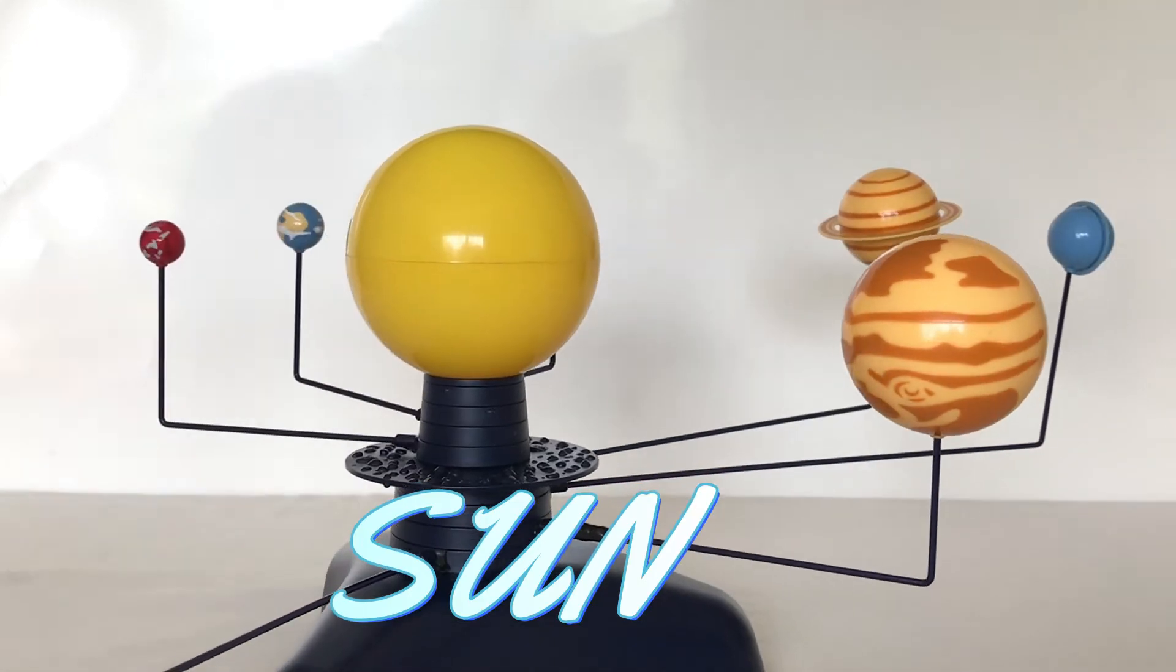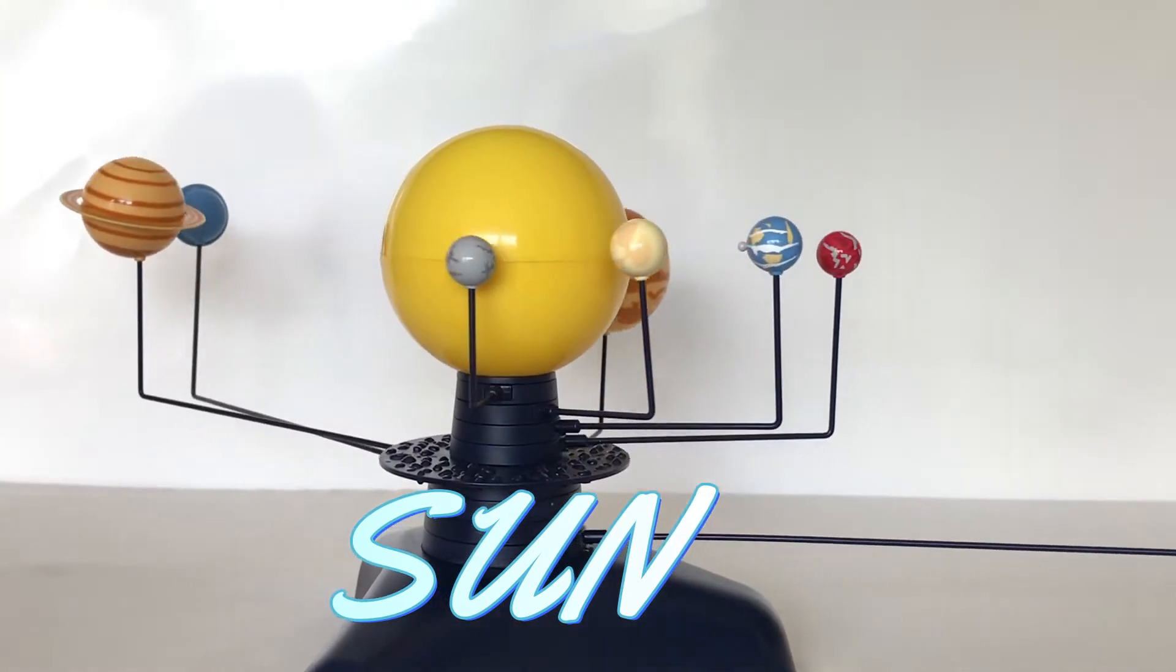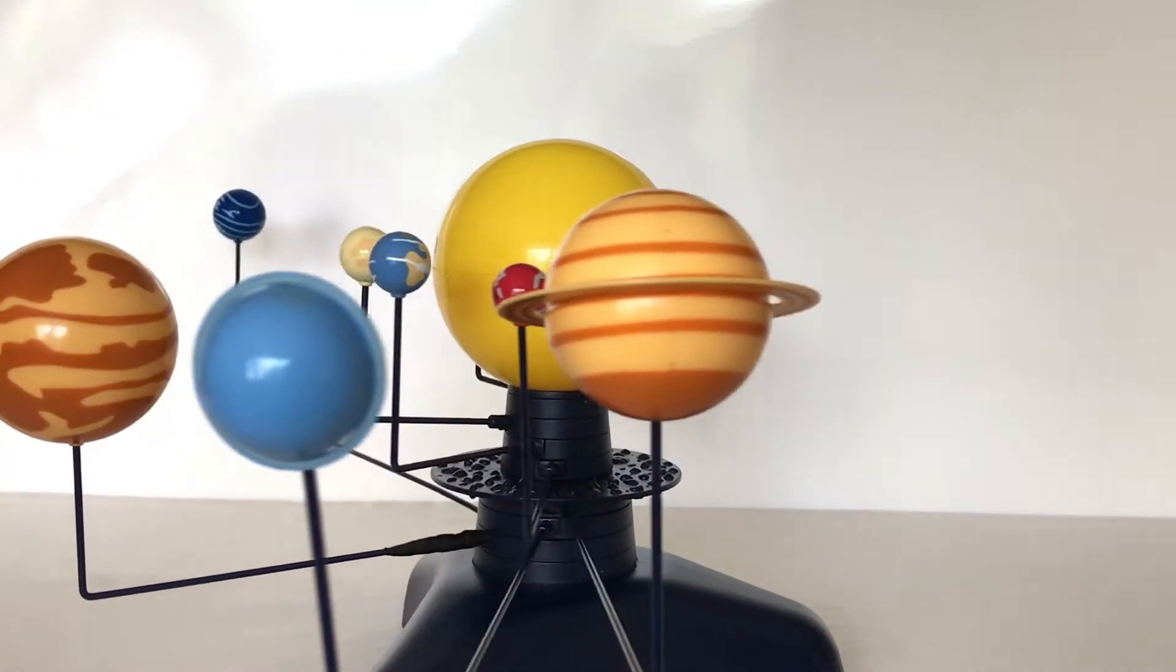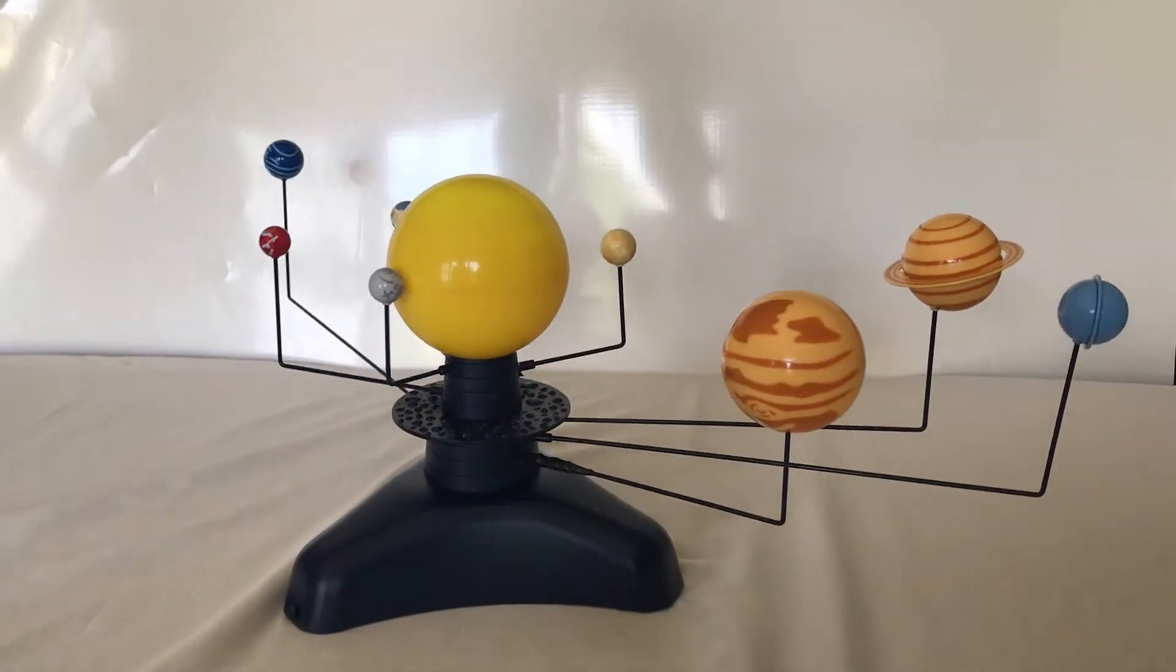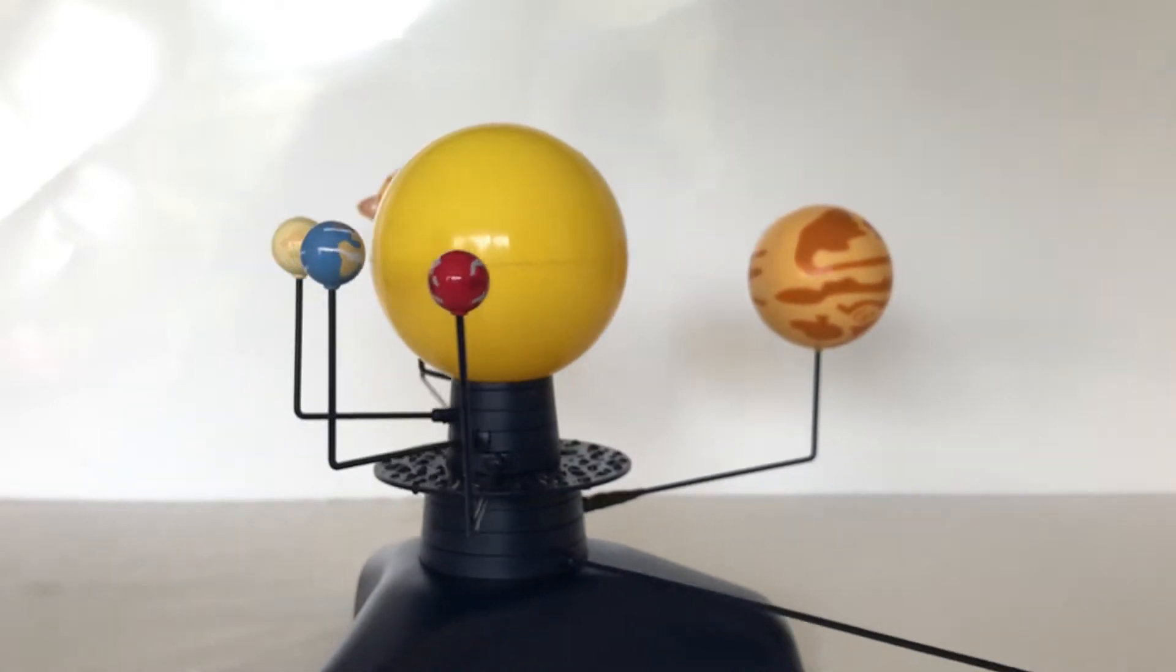So this is the whole solar system. The first planet in the solar system is called Mercury. It's right here, close to the Sun. Mercury is the hottest planet in our solar system. The second planet is Venus.